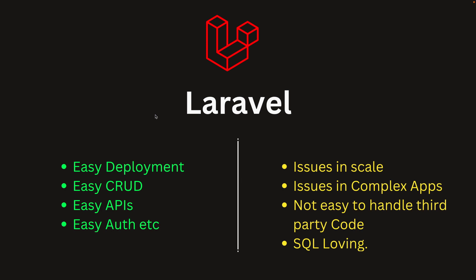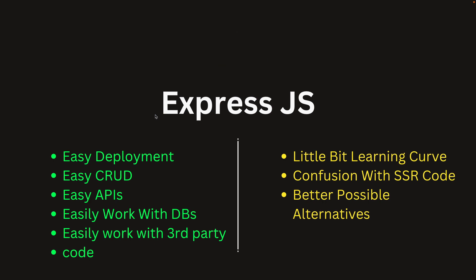If you want to code your own backend but prefer something more flexible, I recommend Express.js. You can easily deploy your code even on shared hosting — most providers support Node.js, or you can spin up a VPS with one-click install. CRUD operations are easy using available ORMs, and creating APIs is straightforward. You can work with any database you want, and using third-party libraries with Express.js is really easy, which is important since you'll use many of them in a real product.